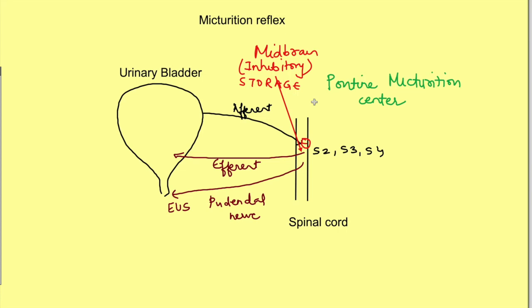There is another center—the pontine micturition center. This center actually facilitates this reflex, and these centers in turn are under the inhibitory influence of the cortex. Whenever there is a desire to micturate, the inhibitory influence on the micturition center is removed and that on the storage center is increased. This will increase the facilitation of the reflex and lead to voiding of the urine.